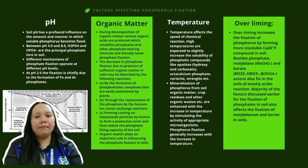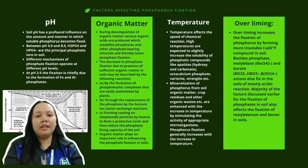Temperature affects the speed of chemical reactions. High temperatures are expected to slightly increase the solubility of phosphatic compounds like apatites, hydroxide and carbonate, octa-calcium phosphate, variscite, strengite, and others. Mineralization of phosphorus from soil organic matter, crop residues and other organic waste is enhanced with increasing temperature by stimulating the activity of appropriate microorganisms. Phosphorus availability generally increases with increasing temperature.